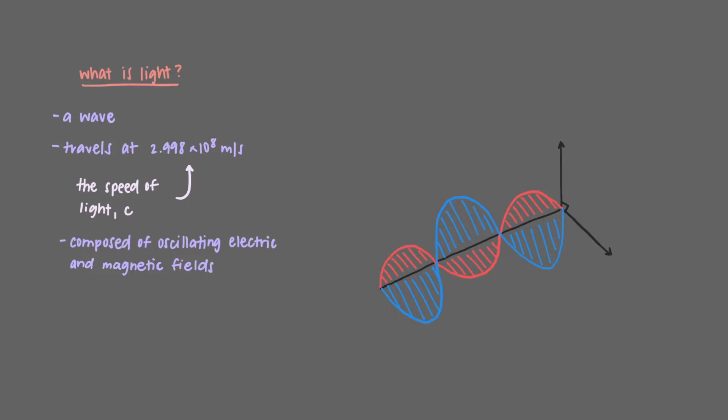Light is composed of oscillating electric and magnetic fields that are perpendicular to one another, but we are going to largely ignore the magnetic field since it's not that important to us in chemistry. So let's talk about the electric field.